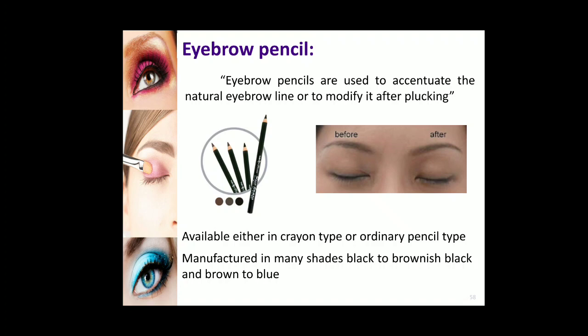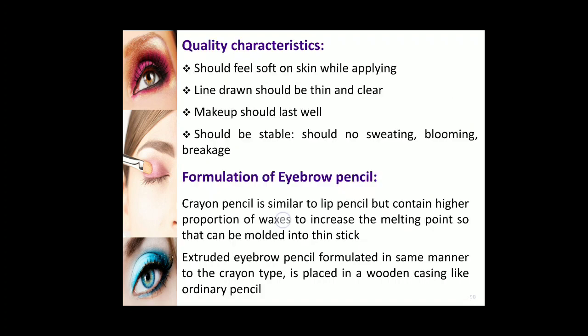Eyebrow pencils are available in crayon type or ordinary pencil type. They are manufactured in many shades, from black to brownish black and brown to blue. They also require certain quality characteristics: they should feel soft on the skin while applying, the line drawn should be thin and clear, the makeup should last well, it should be stable, and it should not cause any sweating, blooming, or breakage.